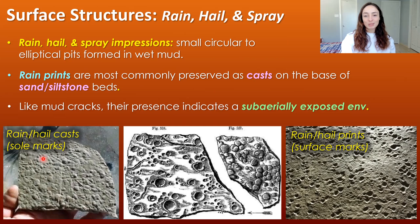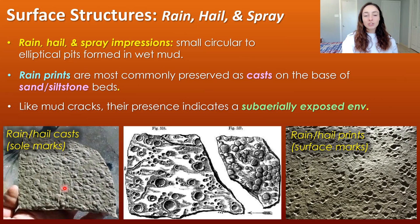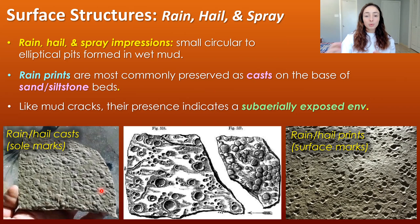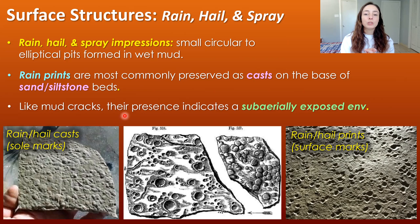Also surface structures — but sometimes also sole markings — are rain, hail, and spray pits or impressions, which are small circular to elliptical pits formed in wet mud by rain, hail, and spray. Rain pits are most commonly preserved as casts on the base of sand or siltstone beds. They can also form as surface depressions when the bedding plane breaks apart optimally, but cast formation is more often preserved because the coarser sandy or silty bed preserves better than the muddy substrate. Like mud cracks, their presence indicates a sub-aerially exposed environment with rain access, not a subaqueous setting.